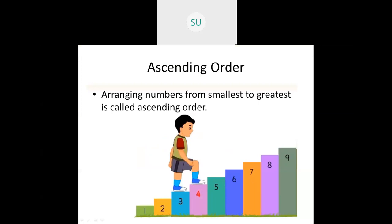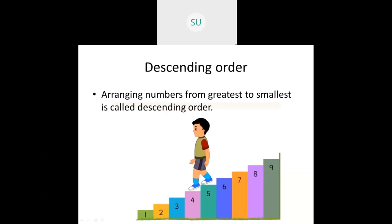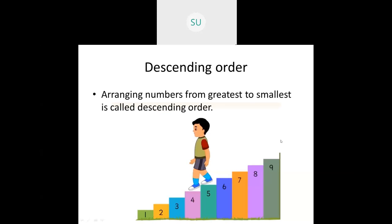He is going from 1 to 9. Then descending order — once he reached the top, he is coming down: 9, 8, 7, 6, 5, 4, 3, 2, and 1. From the higher number he is coming to a lower number — he is descending. Arranging numbers from the greatest to the smallest is called descending order. He came from 9 to 1 in a decreasing order.